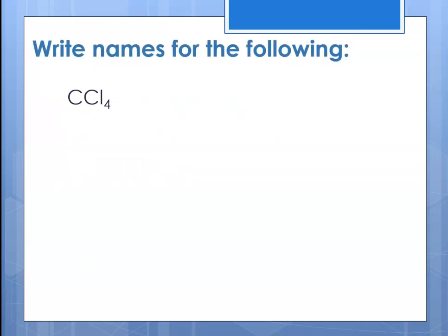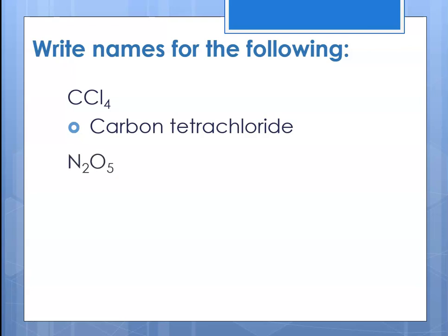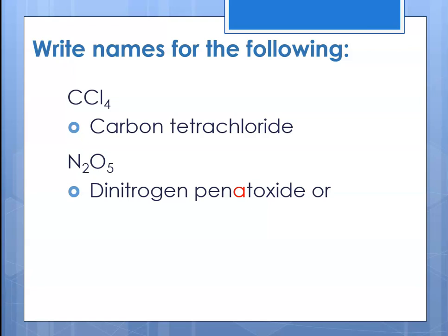Let's try CCl4. The first element is carbon, so we just name carbon — no mono. The second element has a subscript of 4, so that means tetra, and chlor for chlorine, and -ide because it's binary. For N2O5, we would name that dinitrogen pentoxide because there are 5 oxygens. The prefix is attached to the element it applies to — di is attached to nitrogen because there are 2 of that element, so make sure you're putting your prefix in the right place.